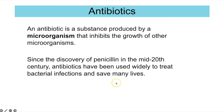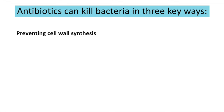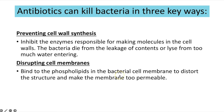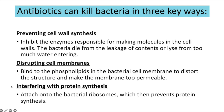An antibiotic is a substance produced by a microorganism that inhibits the growth of other microorganisms. Since the discovery of penicillin — the first antibiotic, discovered in the mid-20th century — antibiotics have been widely used to treat bacterial infections and save many lives. Antibiotics kill bacteria by preventing cell wall synthesis, inhibiting the enzymes responsible for making cell wall molecules so bacteria die from leakage or lysis. They can also disrupt cell membranes by binding to phospholipids, making the membrane too permeable so the bacteria burst, or by interfering with protein synthesis by attaching to bacterial ribosomes.